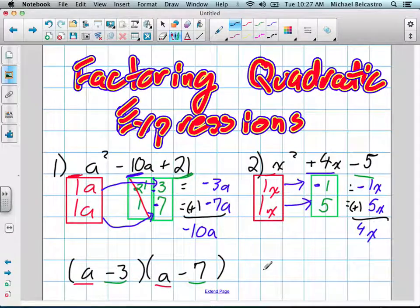When we go to put it into a factored form, we get x as the first term in each, and then negative 1 and positive 5. These are our first terms. These are our second terms.